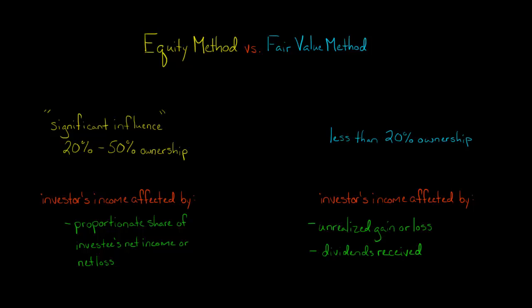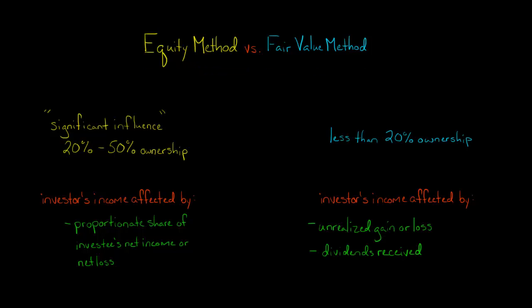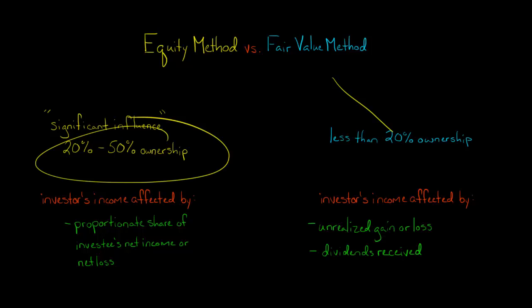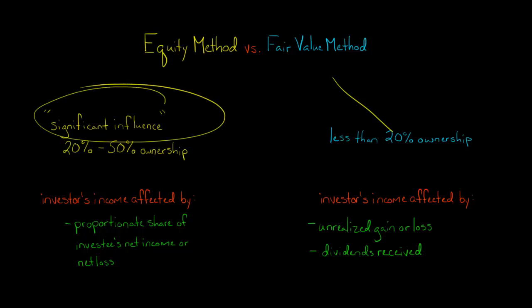How a company accounts for an investment will differ significantly based on whether the company uses the fair value method or the equity method. The fair value method is generally used when the company owns less than 20% of the company in which it's invested. If the company owns 20% to 50%, it's generally presumed to have significant influence over the investee, so in that case you would use the equity method.